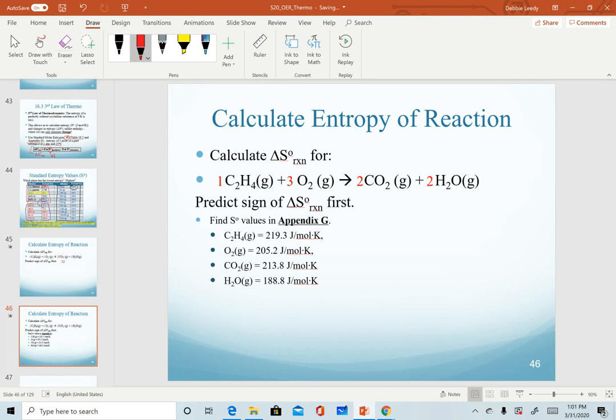To calculate it, we have to look up or be given values. So again, from Appendix G, we have these values. And so for this one, I'm going to do the same setup that I did for enthalpy. I'm going to put my products in brackets and then reactants in brackets and subtract the two.